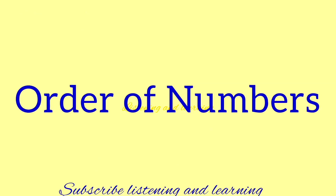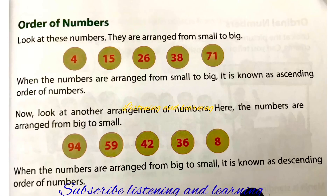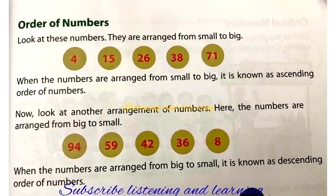Order of numbers. What is an order of numbers? Look at these numbers. They are arranged from smaller number to bigger number — 4, 15, 26, 38, 71. Here the smaller number comes first, that is 4, and the bigger number comes last, that is 71. When the numbers are arranged from small to big, it is known as ascending order of numbers.